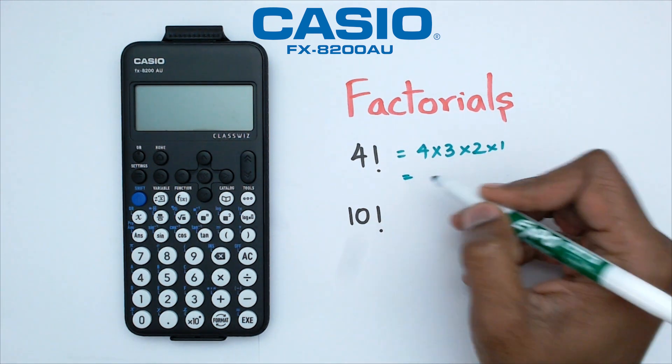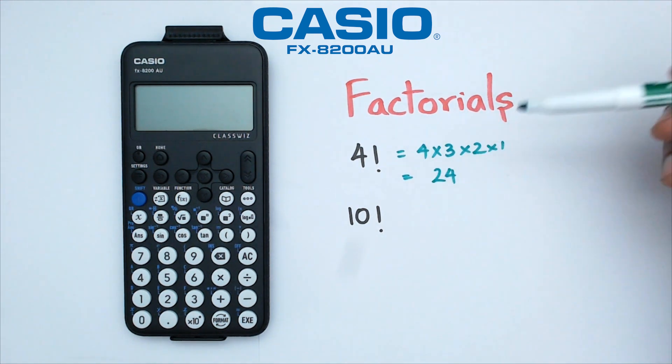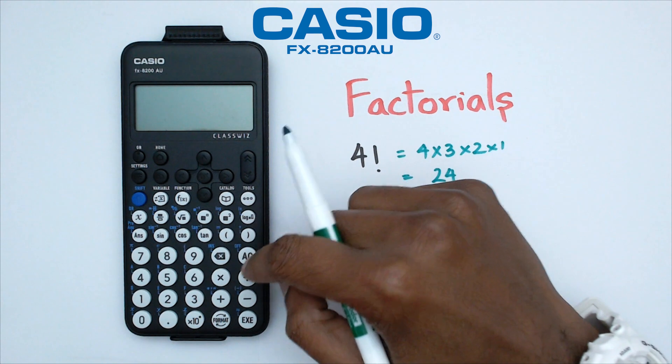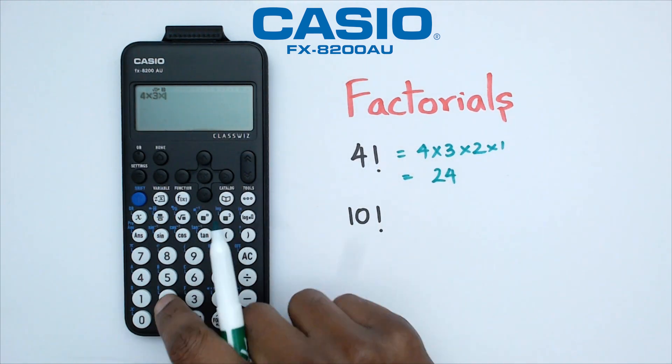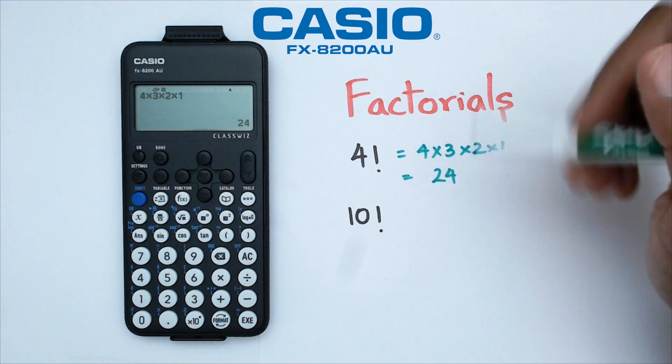Now we know that in this case this equals 24, which is fairly easy to do in the calculator. You switch on your calculator, go 4 times 3 times 2 times 1, and there's our 24.